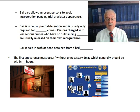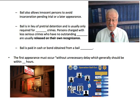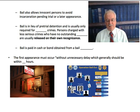This first appearance must occur without unnecessary delay, and this generally should be within 48 hours. Once a police officer arrests you, they have to get you before a judge within 48 hours, or your constitutional rights have been violated. In most states, you're taken before a judge within 12 hours, but 48 is the maximum limit, because we do not want the detention of people who have not been found guilty for extended periods of time without seeing the judge.